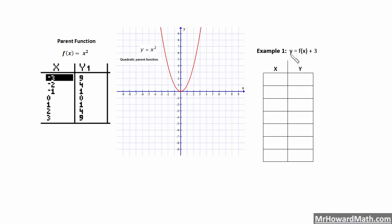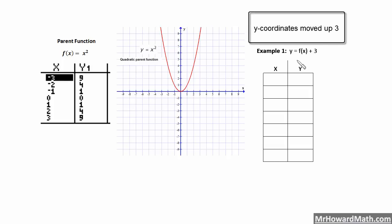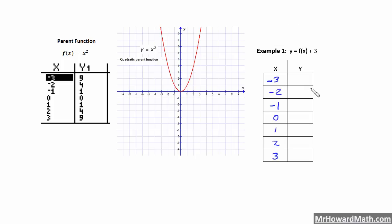So this first example, we have y equals f of x plus 3. We're away from x out here, so that's going to be a vertical shift with the sign, so we're going to move our coordinates up 3. That means our x coordinates will not change, so I'm going to put those in here. Our y values are going to increase by 3. So it was 9 in our parent function, so now it's going to be 12.